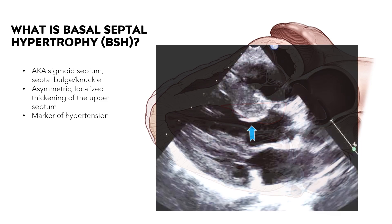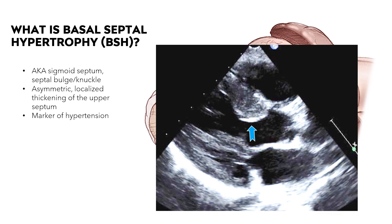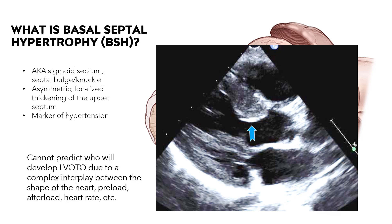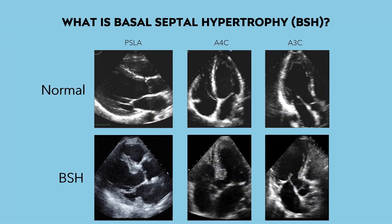Here's the appearance of basal septal hypertrophy on echo. It has been associated with exertional LVOT obstruction and unexplained exertional dyspnea that responds to beta blockers. However, trying to predict who will develop an LVOTO is largely unpredictable due to the complex interplay between the shape of the heart, preload, afterload, heart rate, and many other factors. Examples of basal septal hypertrophy are shown in the parasternal long axis view, apical 4-chamber, and apical 3-chamber — the septal bulge is most prominent in the parasternal long axis view.